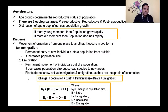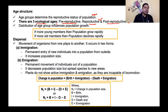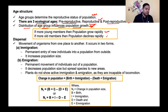Next is age structure. There are three ecological age groups, which define the reproductive status of the population and help predict its future — whether it is an increasing, decreasing, or constant population. These three ages are: pre-reproductive age, reproductive age, and post-reproductive age. Distribution of age groups influences population growth. If there are more young members, the population grows rapidly; if more old members, the population declines rapidly.